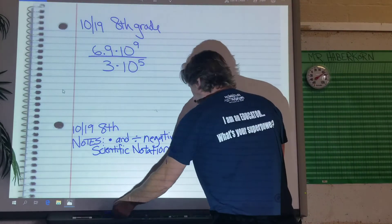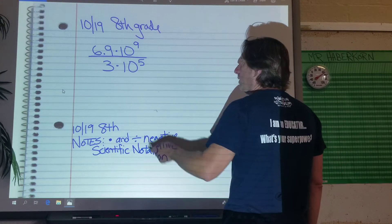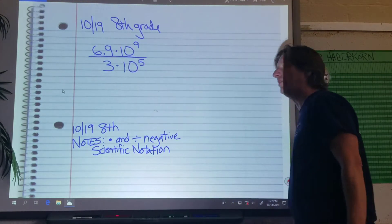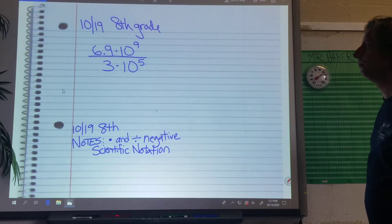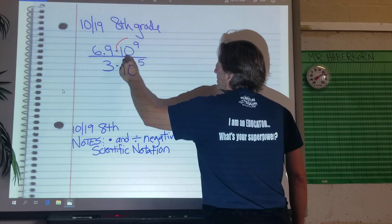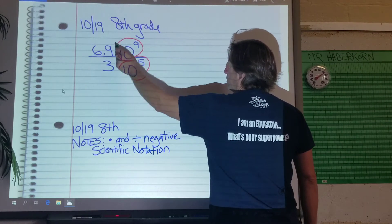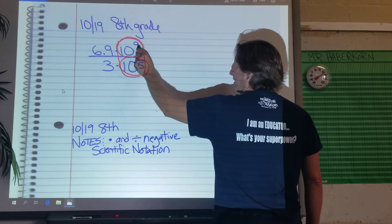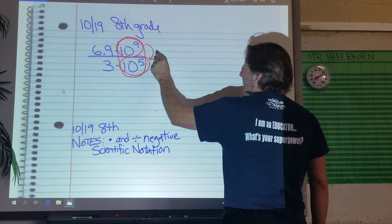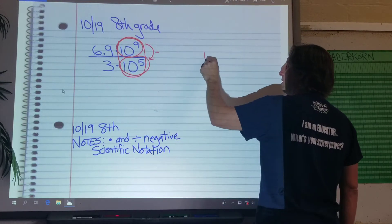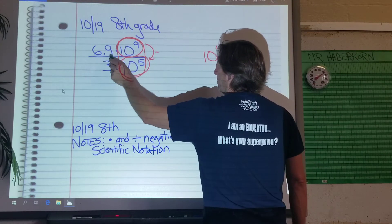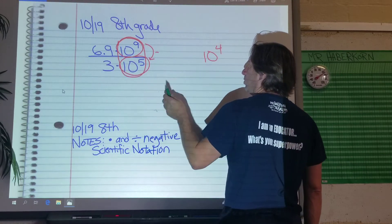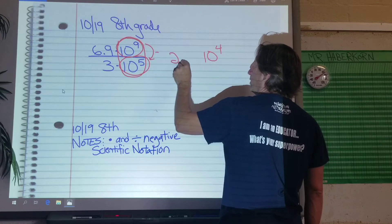All right, so let's take a look at today's problem of the day. We're dividing some scientific notation, right? Well, the good news is it's pretty easy. If we look at our exponents, if we just look at this problem, we know we just have to subtract those, right? So I end up with 10 to the fourth, and then 6.9 divided by three, which is 2.3.